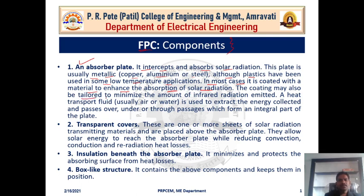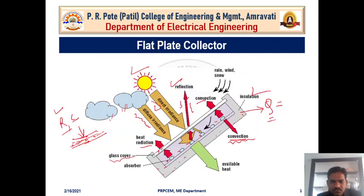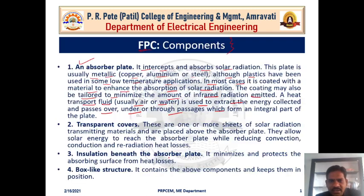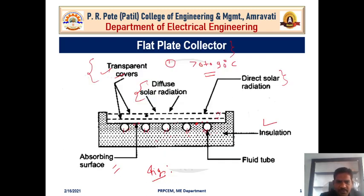A heat transfer fluid — usually air or water — is used to extract the energy collected and passes over, under, or through a passage which forms an integral part of the plate. The absorber plate, painted black, acts as a black body which absorbs a lot of radiation. The heat is transferred through the tubes, circulating water or air, which is then heated and can be used for different purposes.